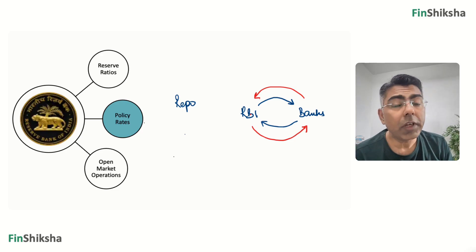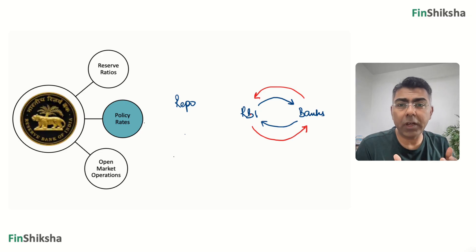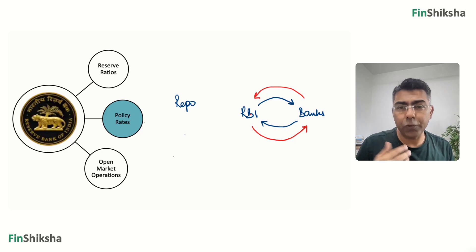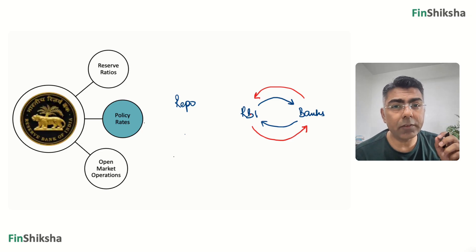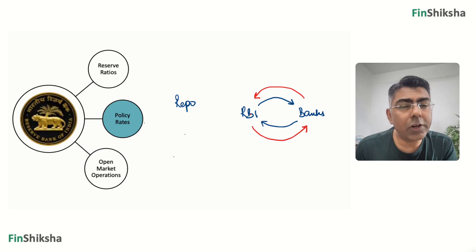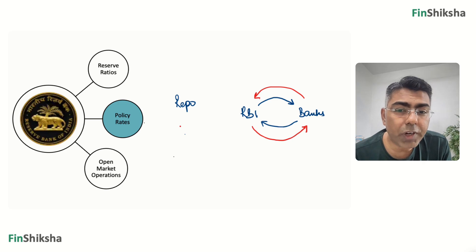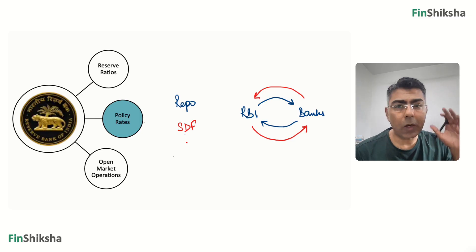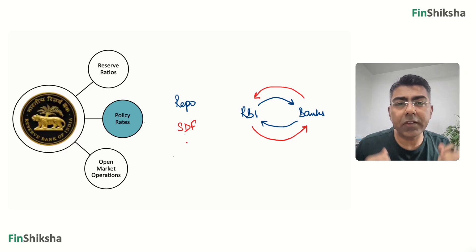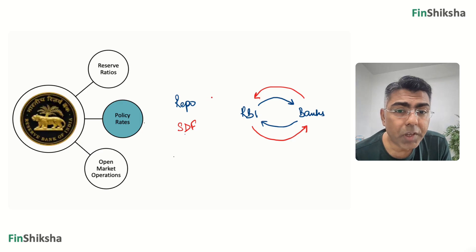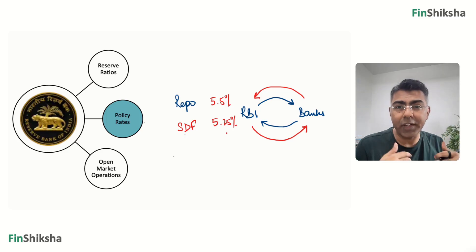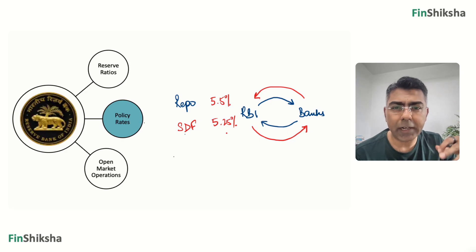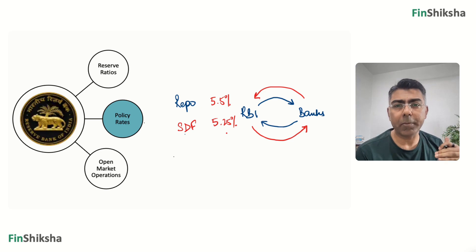The opposite used to be called reverse repo, where RBI would sell bonds and banks would give money and take it back later. If banks had excess cash, RBI would sell bonds to absorb it. However, RBI introduced a rate called Standing Deposit Facility (SDF) — a simple deposit facility where if a bank has excess cash, they can deposit it with RBI and earn interest. Currently, repo is at 5.5% and SDF is 25 basis points lower at 5.25%, and they generally move in tandem.